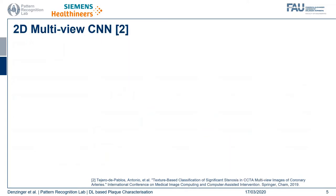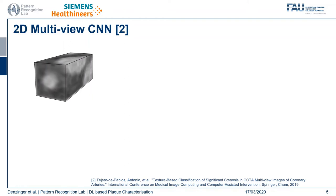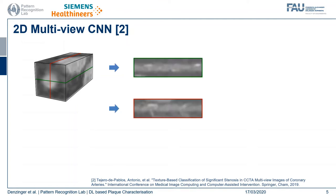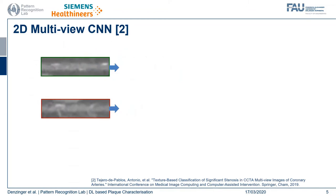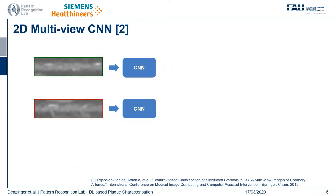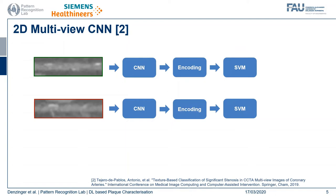The second approach is based on the work of Teixeiro de Pablos and others and is a 2D multi-view convolutional neural network-based approach. The starting point is again the multiplanar reformatted volume stack of the lesion, and now instead of analyzing the whole volume stack, only the central slices are taken. For each of those central slices, features are extracted using a pre-trained convolutional neural net pre-trained on ImageNet, and the resulting features are then reduced in dimensionality, encoded, and further fitted to a support vector machine.